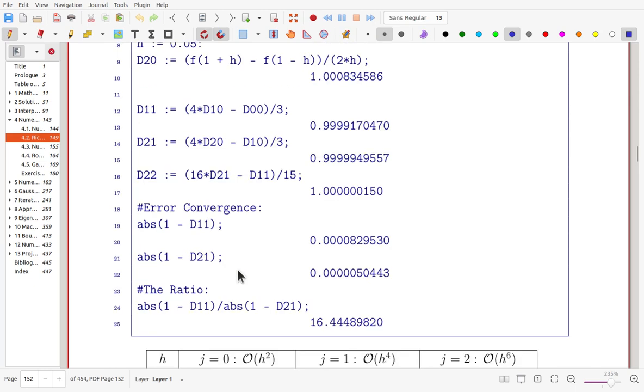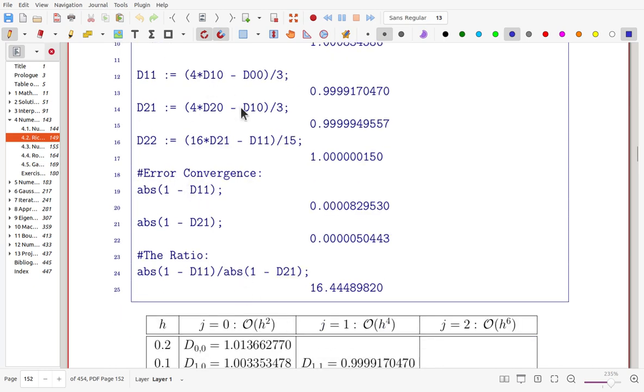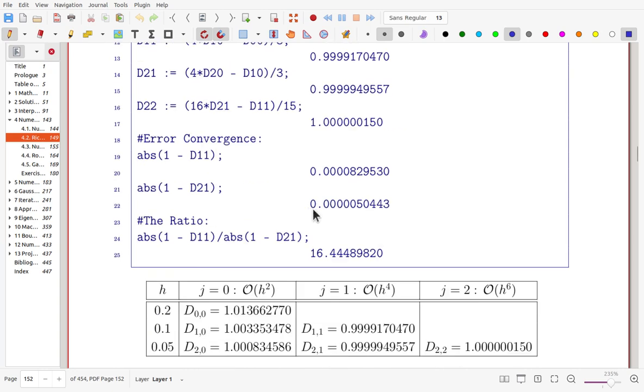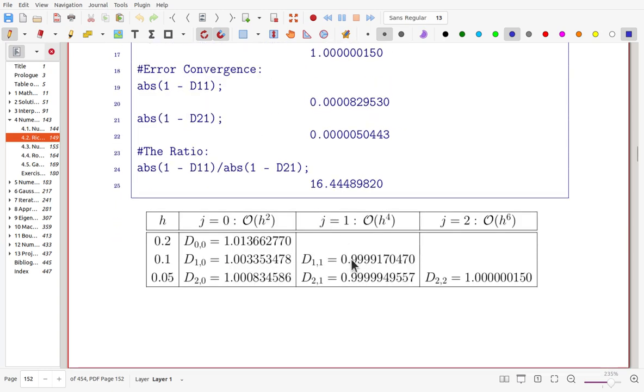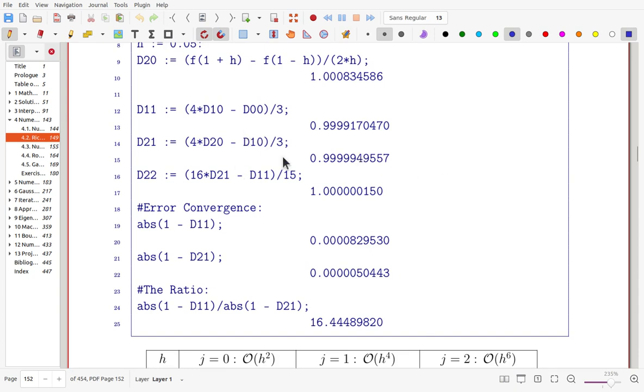We'll see here, that D matrix. And now, D(1,1), in fact, that one will be gotten 4 times this one minus this quantity divided by 3. Now, for this one, 4 times this one minus this one divided by 3. And now, 16 times this one minus this value divided by 15, we'll have that one. That is exactly here, the matrix computation. 4 times of D(1,0) minus D(0,0) over 3.